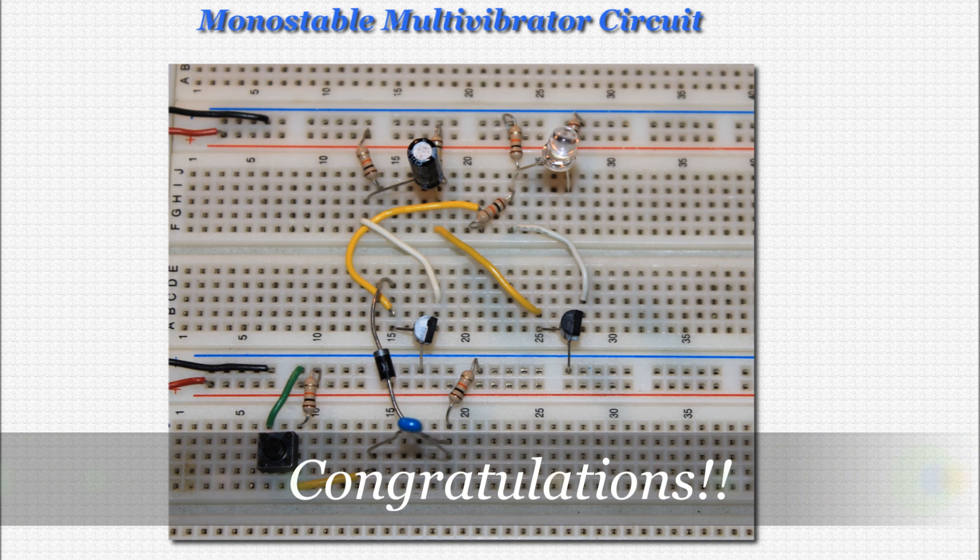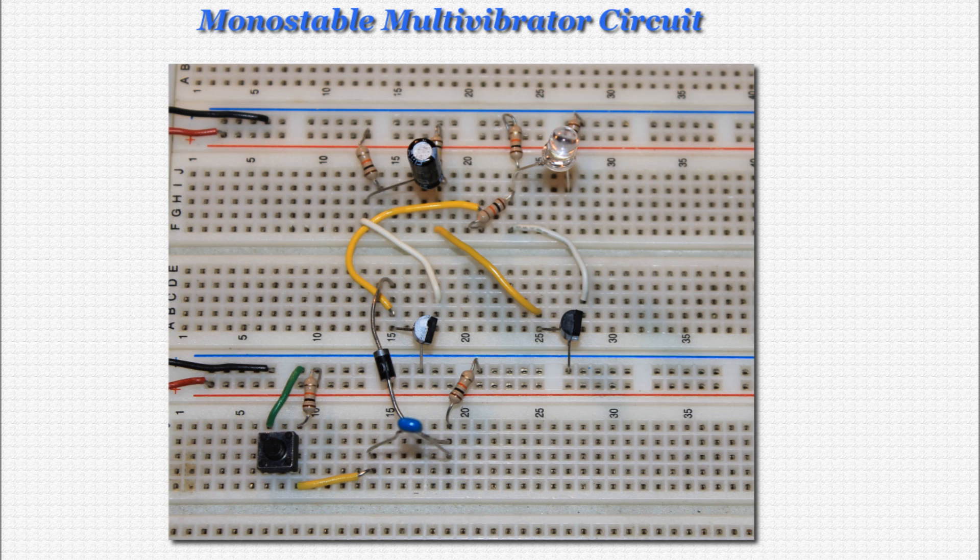Great! The monostable multivibrator circuit is built. I know you're anxious to test it out now, so if you want, go ahead and connect your 9V battery to the circuit and press the button. It should light up for about 1.1 seconds, then go dark. Repeated button presses will produce the same result. Pretty cool, huh?